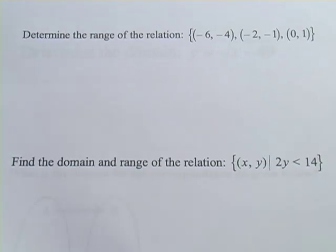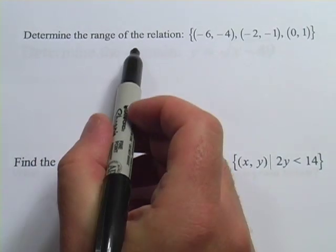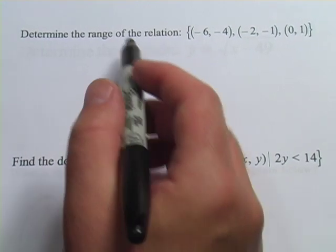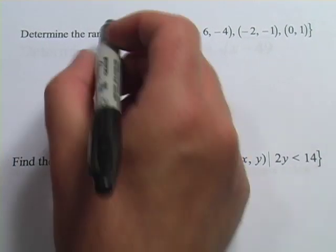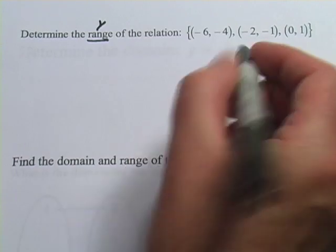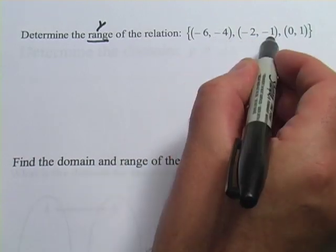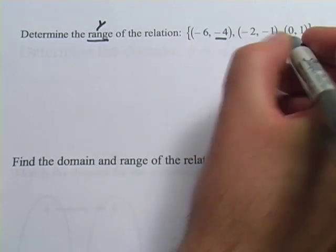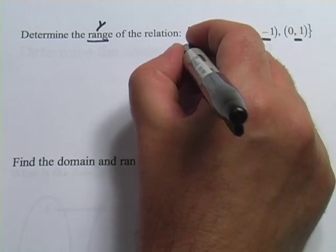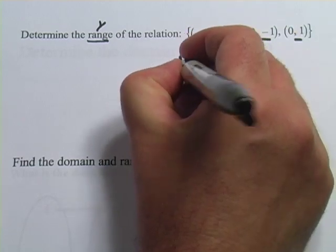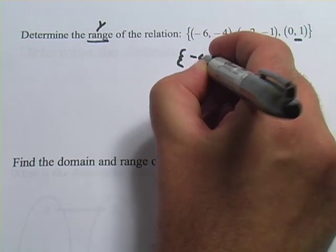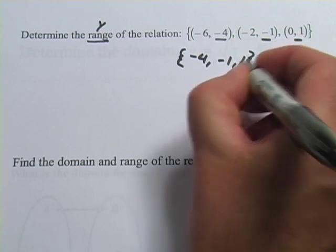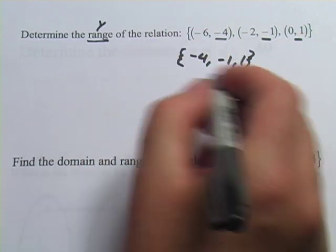Let's look at one with a relation. This one says determine the range of the relation. Range is y-values, so I'm going to look at the y-values of the points listed in this relation and simply make a set with those values: {negative 4, negative 1, and 1}. And that is my range.